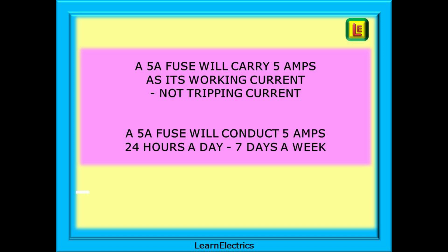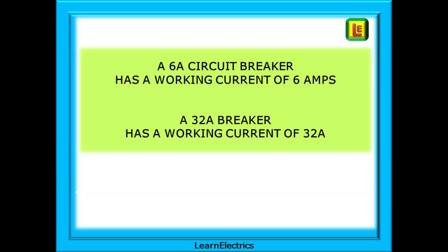A 5 amp fuse will conduct 5 amps for 24 hours a day, 7 days a week. That's the design criteria. A 6 amp circuit breaker has a working current of 6 amps. A 32 amp breaker has a working current of 32 amps.